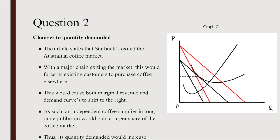To answer this question, we must look at changes to quantity demanded. The article states that Starbucks exited the Australian coffee market. With a major chain exiting, this would force its existing customers to purchase coffee elsewhere. This would cause both the marginal revenue and demand curves to shift to the right. As such, an independent coffee supplier in long-run equilibrium would gain a larger share of the coffee market, and its quantity would therefore increase.